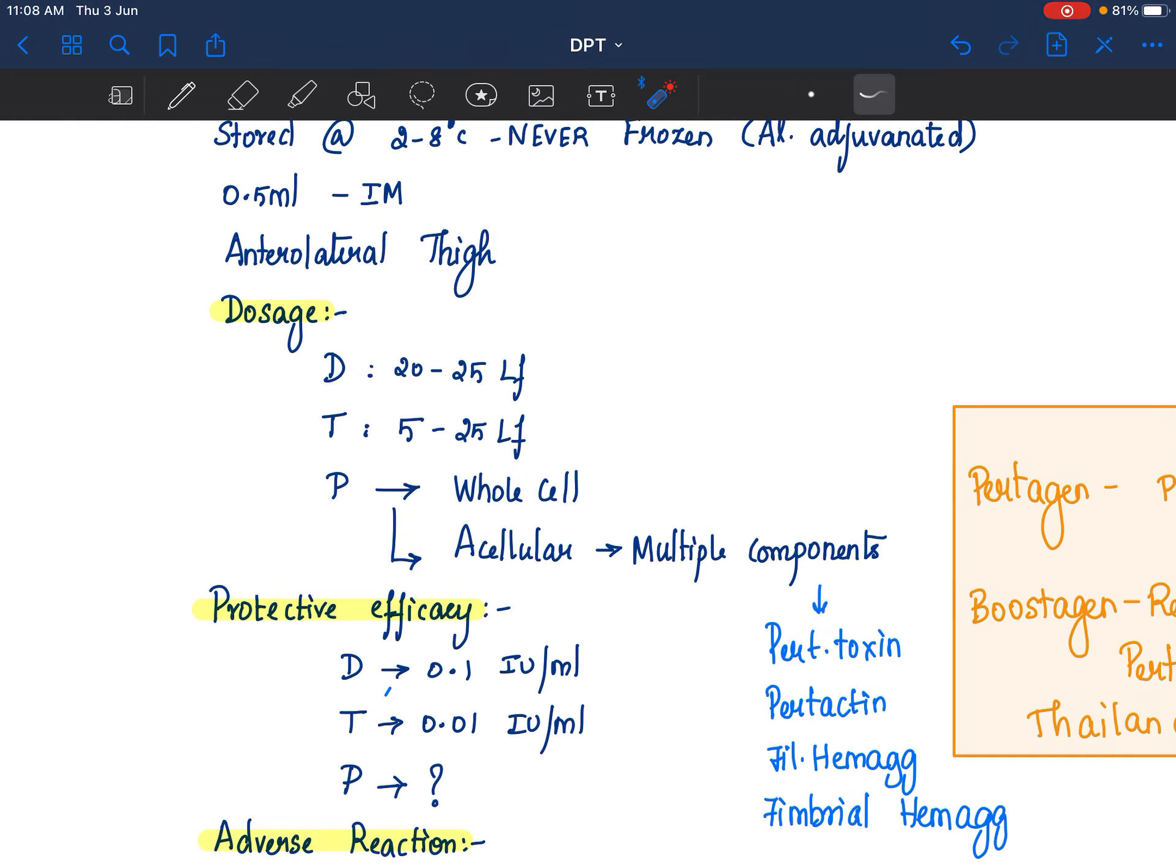Those Ixim vaccines have just filamentous hemagglutinin and pertussis toxin. So those which contain 3 and above components are more effective than those contain just 2 components.